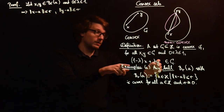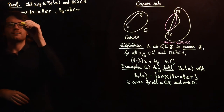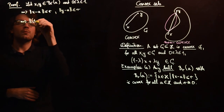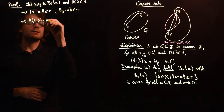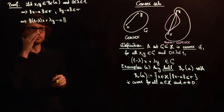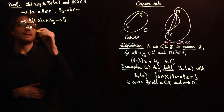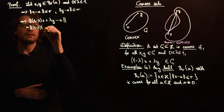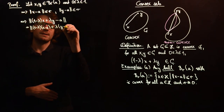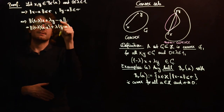We have to show that the convex combination is also contained in the ball, so we look at the distance between (1 minus lambda)x plus lambda·y and a. We can write this distance, by splitting up the a term, as the norm of (1 minus lambda)(x minus a) plus lambda(y minus a), since minus(1 minus lambda)a minus lambda·a equals minus a.